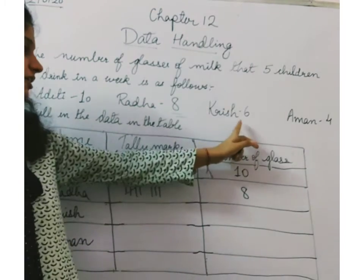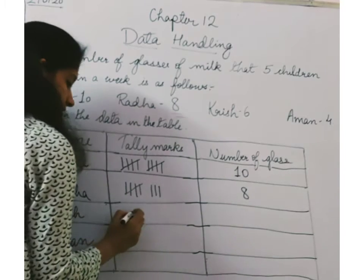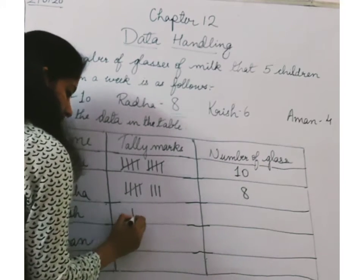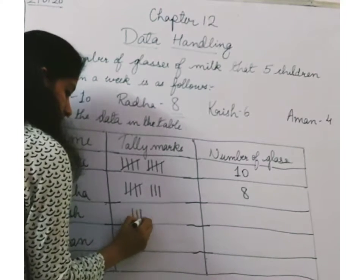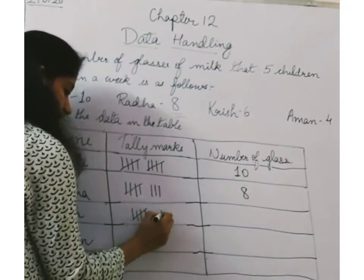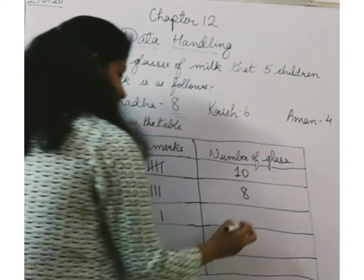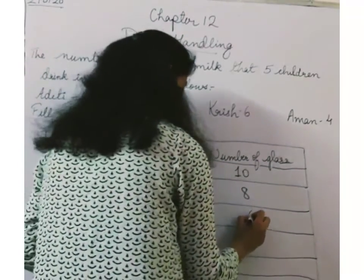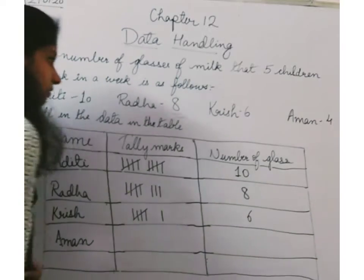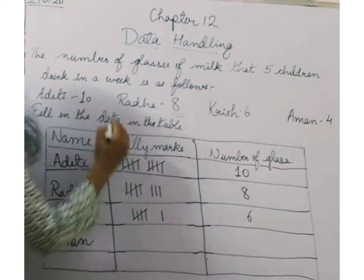Next. Krish brings how many glasses? Six. So let us do this: one, two, three, four, five, and the last one is six. All right. Krish is also done.